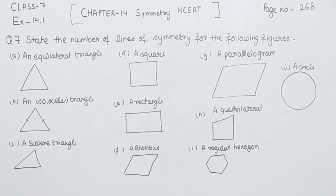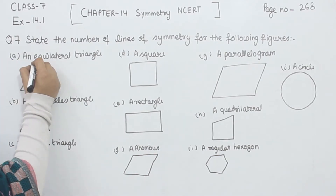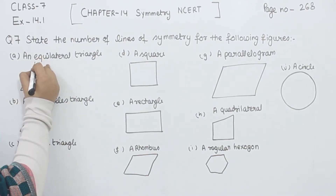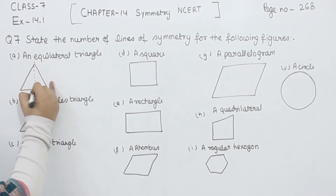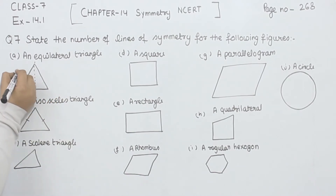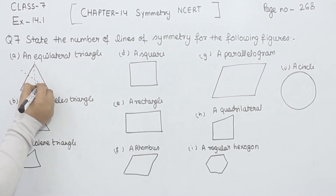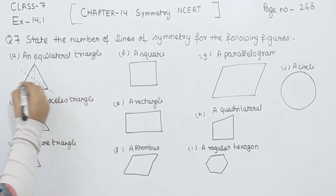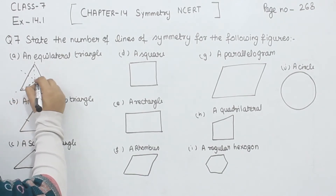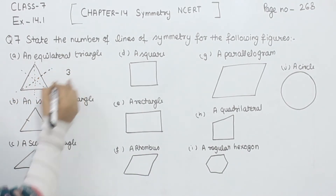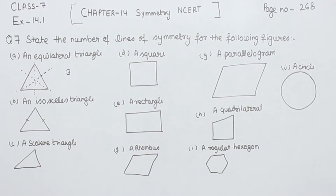So, start with the first one. The first one we have is the equilateral triangle. The equilateral triangle has all its sides equal to each other. So we are going to draw the lines of symmetry here. This will have three lines of symmetry.